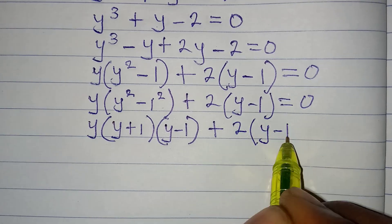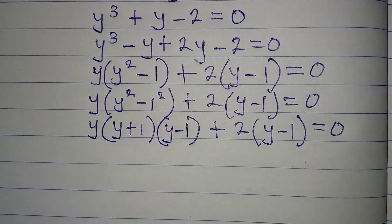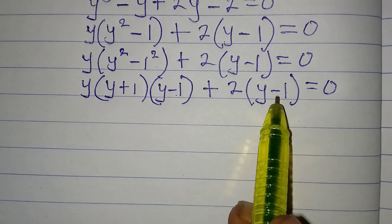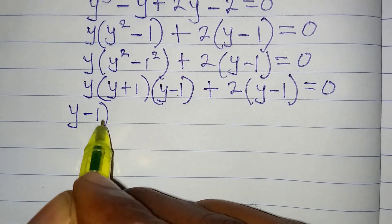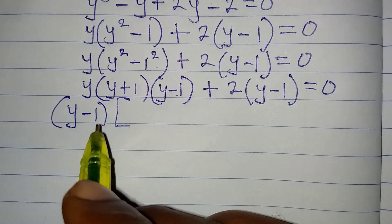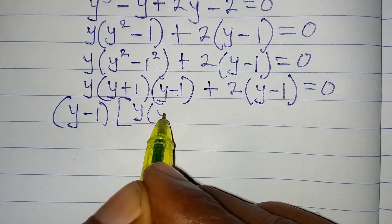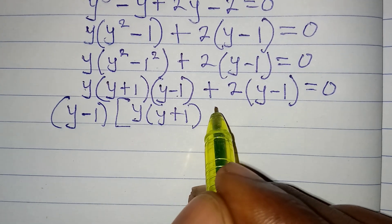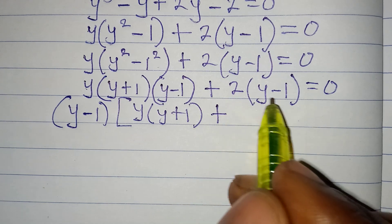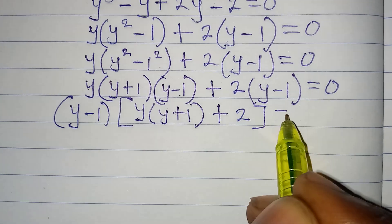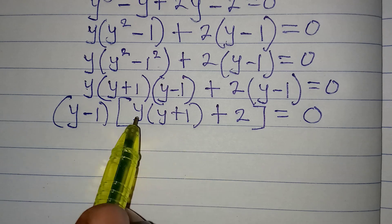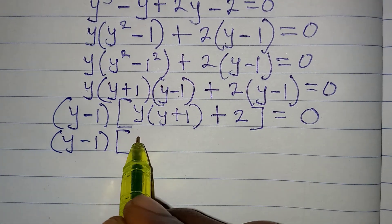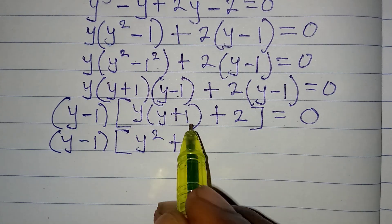Now we can see the common factor is (y − 1), which appears in both terms. Factoring out (y − 1) gives (y − 1) times the quantity [y(y + 1) + 2] = 0. Expanding inside the bracket: y squared plus y times 1 is y, then plus 2, so we have (y − 1)(y² + y + 2) = 0.